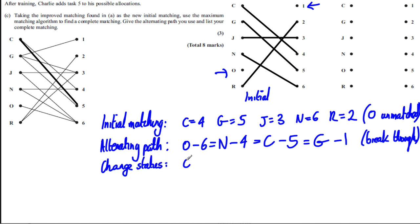That's the next step. So O now gets fixed to 6. Which is no longer with N. Because N is with 4. Which is no longer with C. Because C is 5. Which is no longer with G. Because G is 1. And now we write our complete matching.